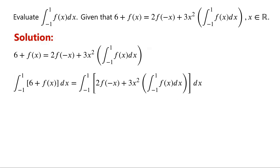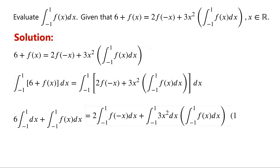We know that the integral of a sum of functions is equal to the sum of the integrals. So the left-hand side equals 6 times the integral of dx from negative 1 to 1, plus the integral of f of x dx from negative 1 to 1. Similarly, the right-hand side equals 2 times the integral of f of negative x dx from negative 1 to 1, plus the integral of 3x squared dx from negative 1 to 1, times the integral of f of x dx from negative 1 to 1. Note that the integral of f of x dx from negative 1 to 1 is a constant value, so it can be moved outside of the other integral.